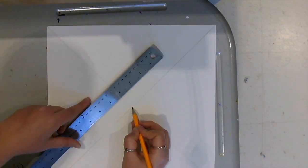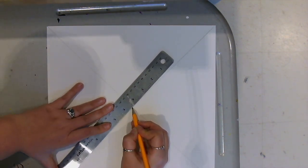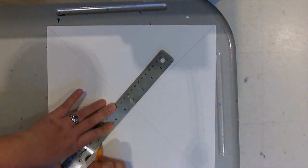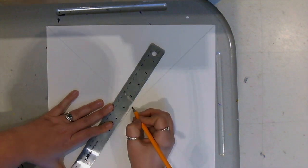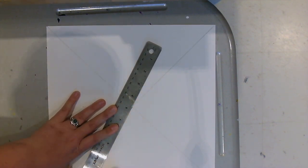You're next going to connect that center vanishing point to each of those little tally marks you just did. Always making sure to keep your ruler connected to the mark that you made at the bottom, that every inch mark, and that center.